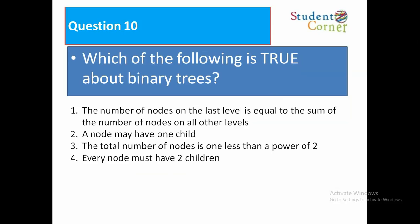Question 10, the last question: Which of the following is true about binary trees? Options: 1. The number of nodes on the last level equals the sum of nodes on all other levels, 2. A node may have one child, 3. Total number of nodes is one less than a power of two, 4. Every node must have two children. Answer: option 2, a node may have one child.